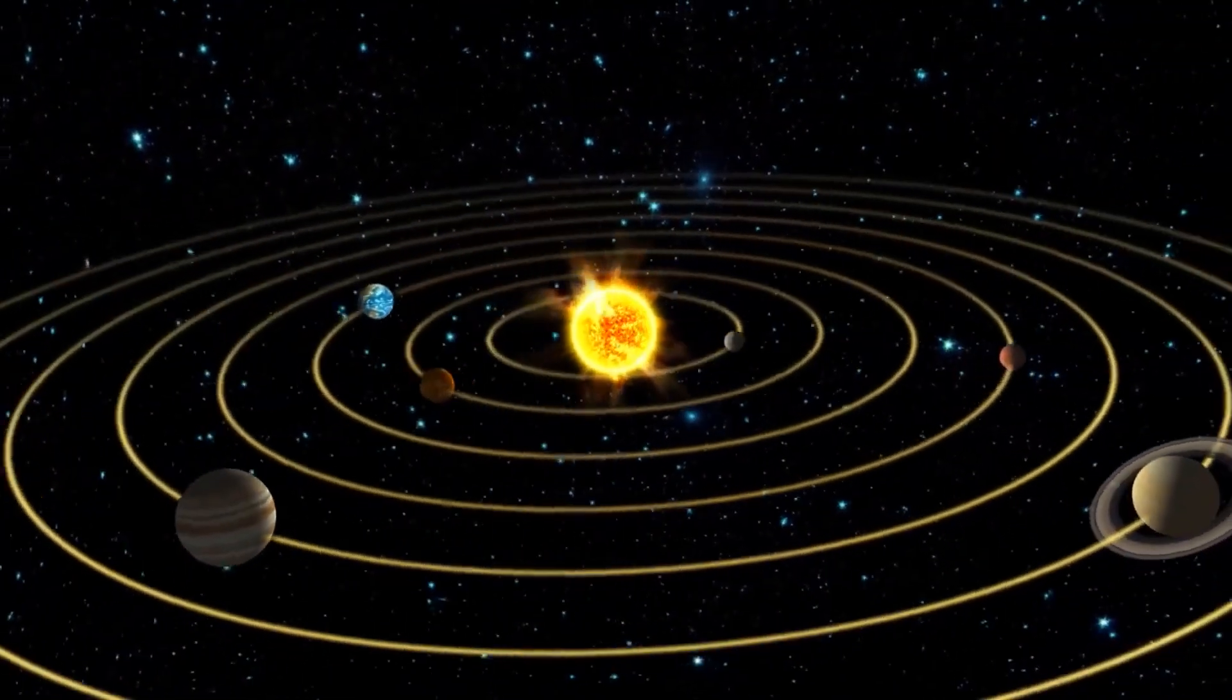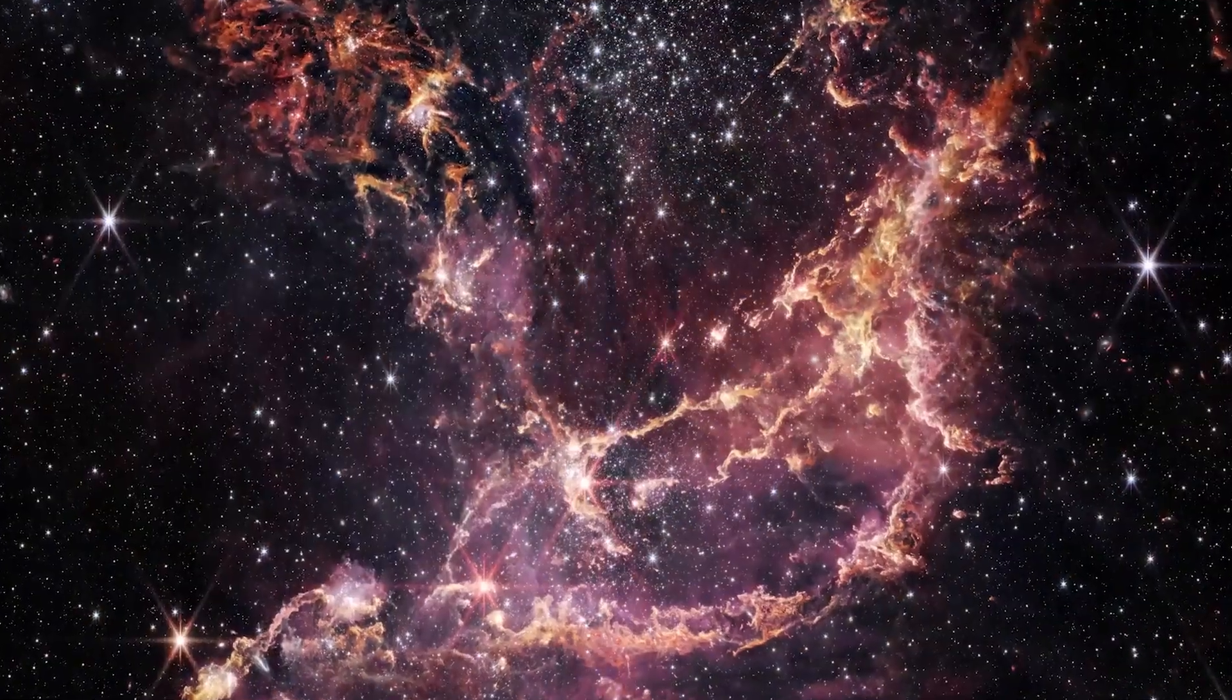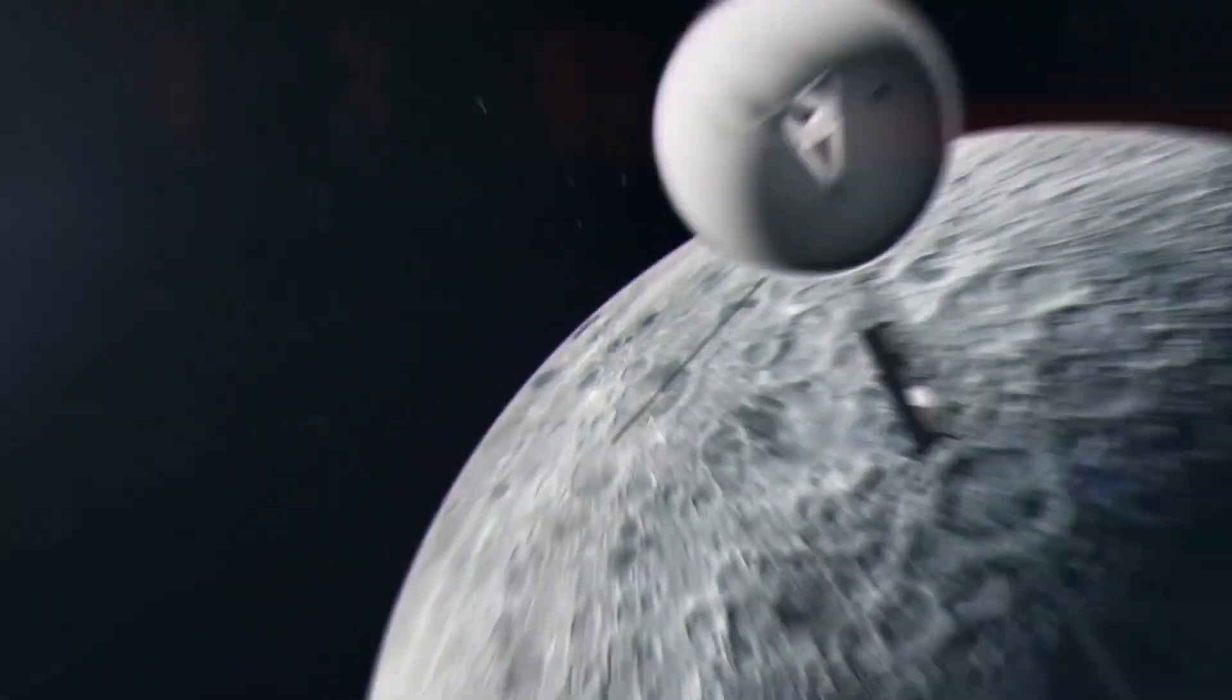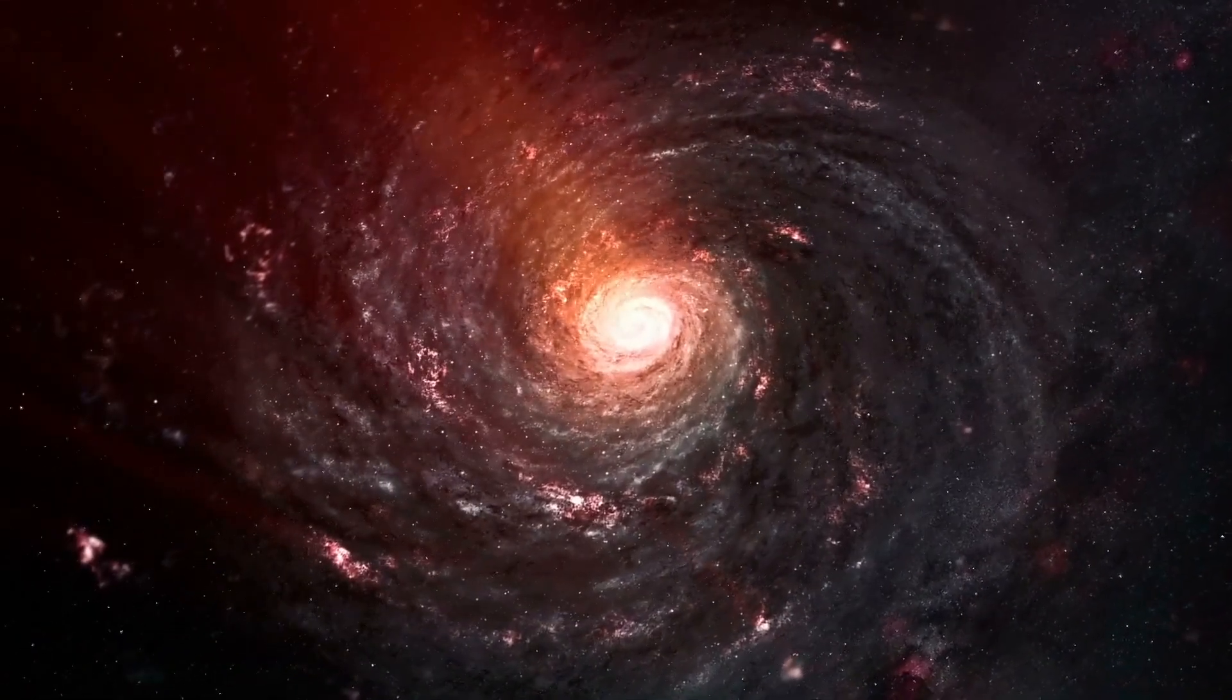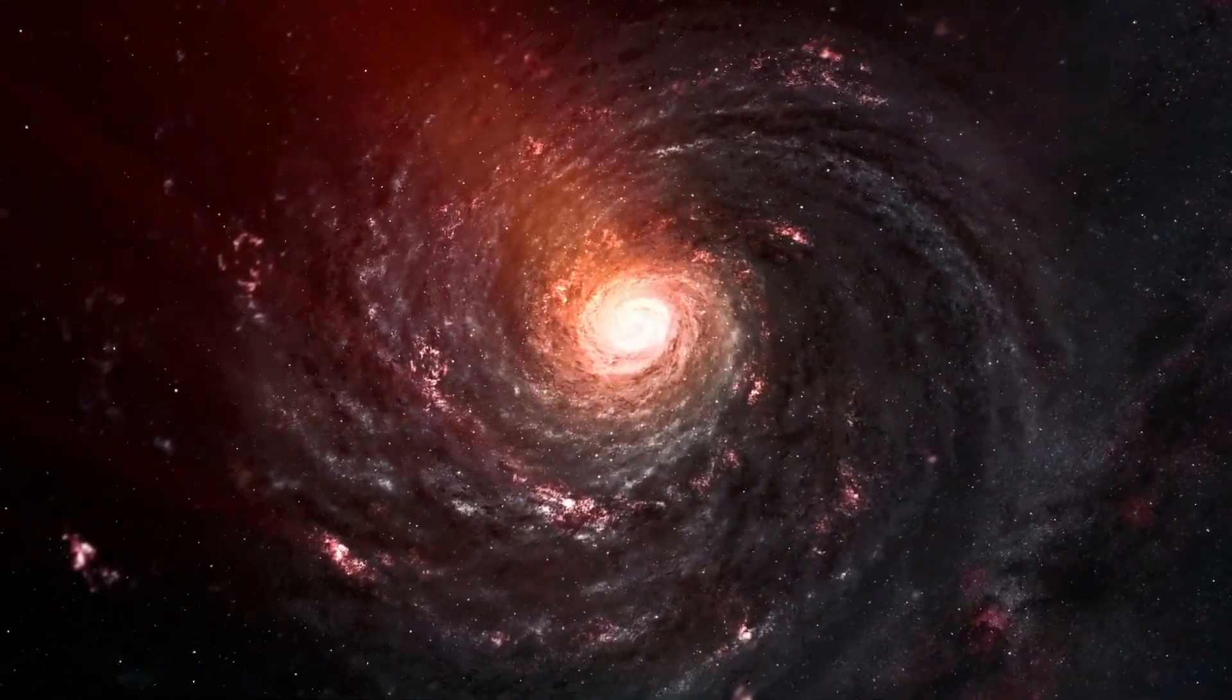The universe is enormous and our solar system is only a tiny part of it. The breadth of the initial photos from James Webb and the interstellar travels of Voyager 1 and 2 show that the universe is vast beyond the solar system.